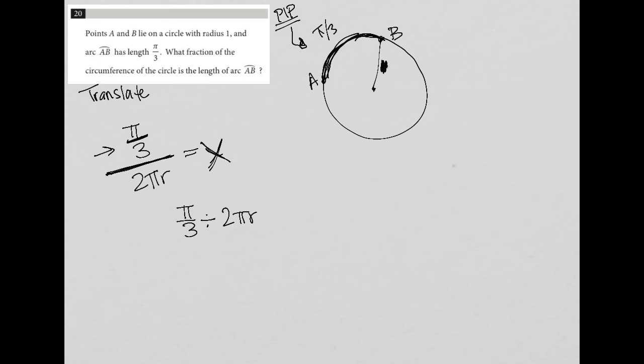Again, we know that r is 1, so let's just get rid of that. So really that's just going to be 2π.